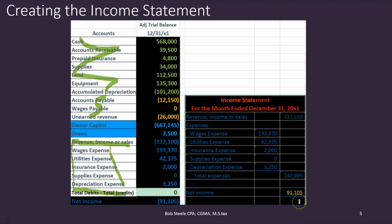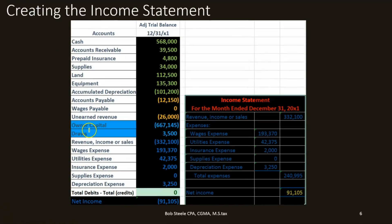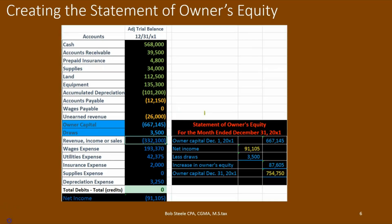You might be asking why these numbers are yellow — that's because we're going to see that net income related to another financial statement. That net income means we found a home for all of this. The only accounts we haven't really accounted for are the ones we scrunched up into one number on the balance sheet, but we really need to break those out into another statement: the statement of owner's equity.